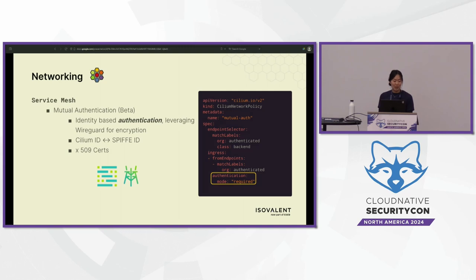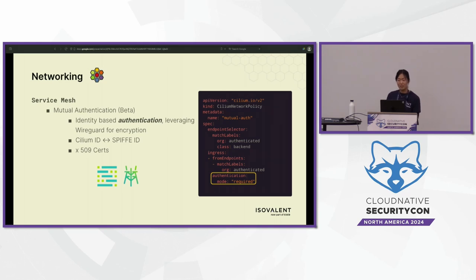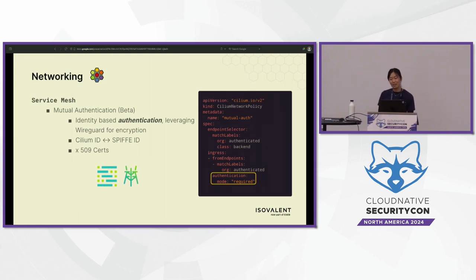With the service mesh, you also have mutual authentication — this is a beta feature, I really want to emphasize that. Mutual authentication ensures that two parties are authenticated with each other, and once authentication is complete, communication can flow. It's best used with encryption such as WireGuard. At a high level, each Cilium ID is mapped to a SPIFFE ID, leveraging X.509 certificates and the SPIFFE/SPIRE CNCF project, with a SPIRE server and a per-node SPIRE agent establishing a chain of trust before communication is allowed.